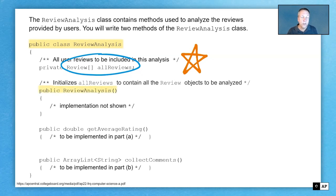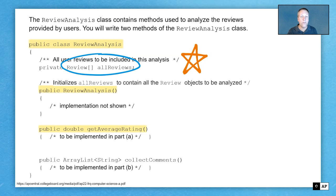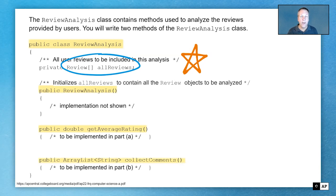There's a constructor here, so we know we can construct objects. But the two methods that we're going to be concerned with is getAverageRating, which returns a double — that's what we're going to do in part A. And then there's also the collectComments method, which returns an ArrayList of strings — and that's what Rob's going to be going over for us in part B.